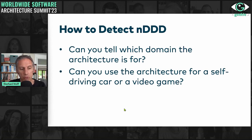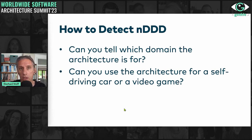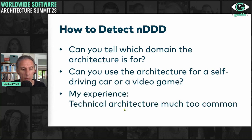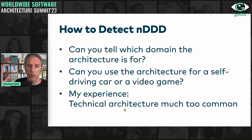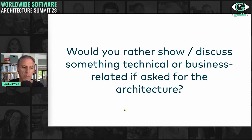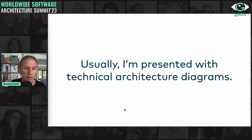Can this be an architecture for a self-driving car or a video game? The architecture I've just shown can basically be for anything — the backend for a self-driving car or a video game. In my experience, this is usually what I'm presented with. You should ask yourself: would you rather show technical stuff or business-related stuff when presenting an architecture? Usually I'm presented with technical diagrams.